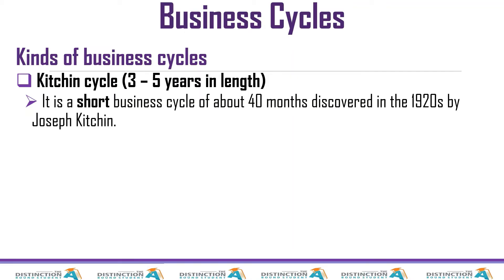The first one is the Kitchen cycle. It takes between three and five years in length. A complete business cycle means moving through all four phases: recession, depression, recovery, and prosperity. If that complete cycle takes between three and five years, we call it a Kitchen cycle. It is the shortest among the four, lasting about 40 months, and was discovered in the 1920s by Joseph Kitchen.